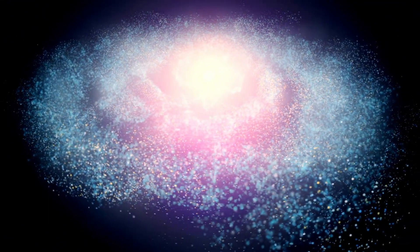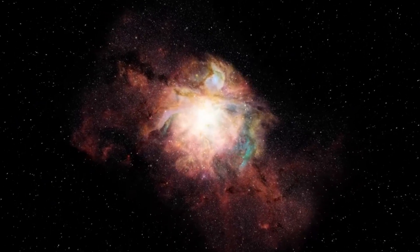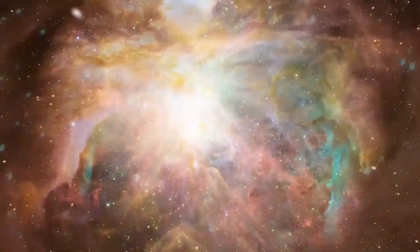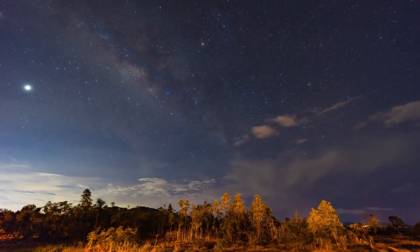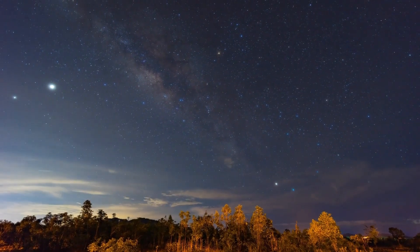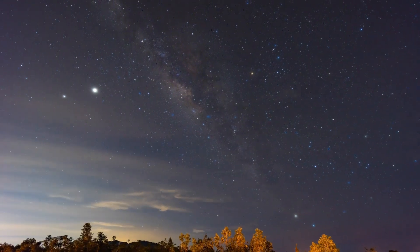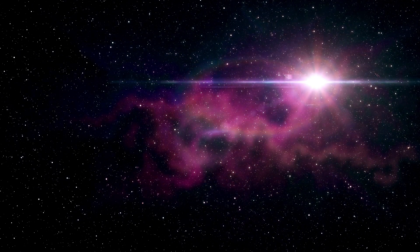What would happen if Betelgeuse went supernova? The idea of a supernova appearing in Earth's sky has captivated people's imagination. New simulations help astronomers understand what we might see when Betelgeuse eventually explodes, expected within the next 100,000 years. Though uncertainty remains, Betelgeuse is about 500 light-years away, and recent research suggests a significant star must be within roughly 150 light-years to cause noticeable effects.